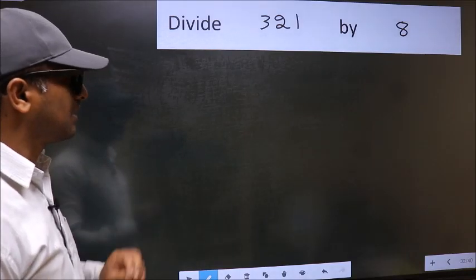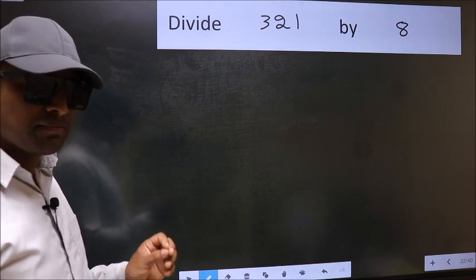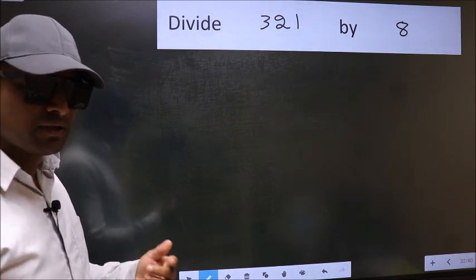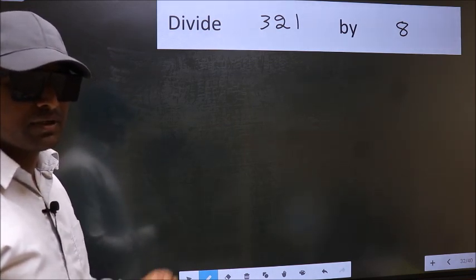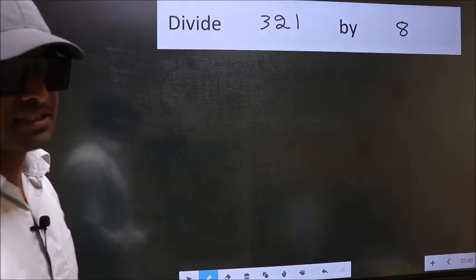Divide 321 by 8. While doing this division, many do this mistake. What is the mistake that they do, I will let you know. But before that, we should frame it in this way.